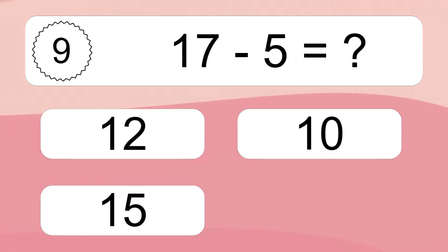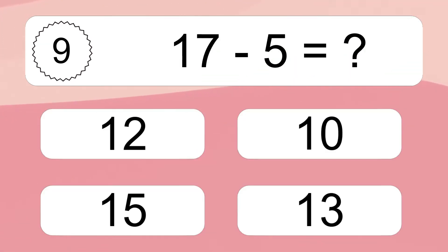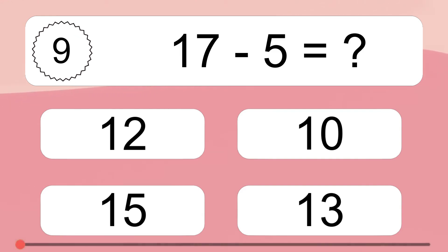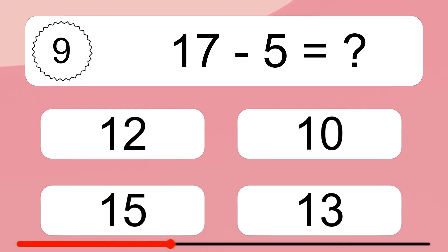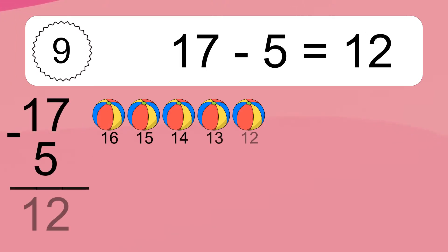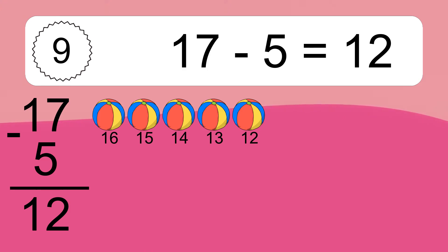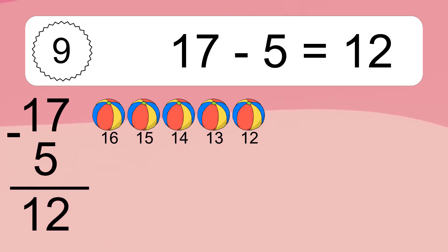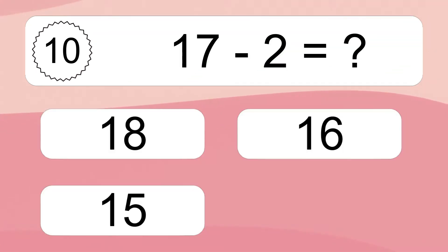17 minus 5 equals what? 17 minus 5 equals 12. Let's count it: 16, 15, 14, 13, 12.